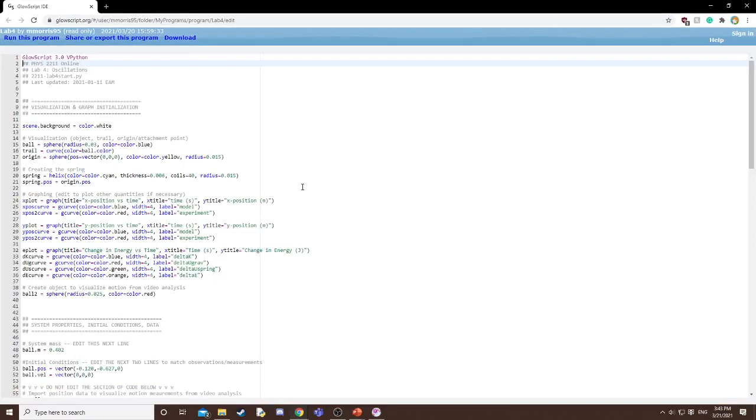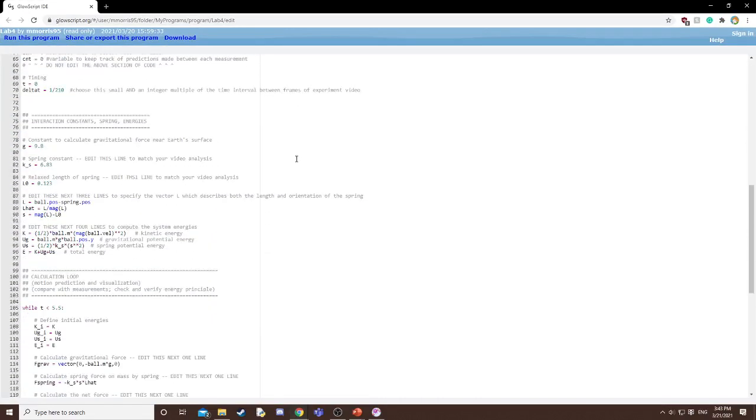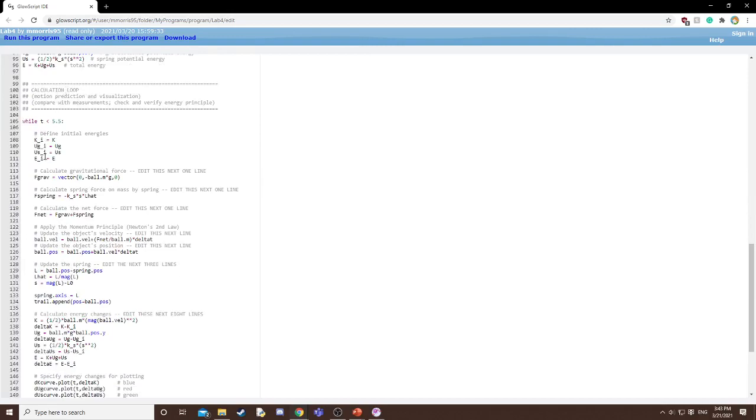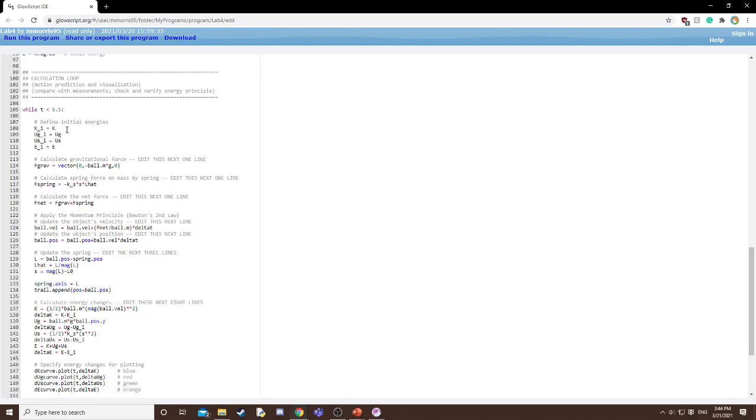For time's sake, I won't go over too many details with the code, but here we have a calculation loop where we initially set the initial energies to be what they were in the last loop. And then we update the forces to get the net force.